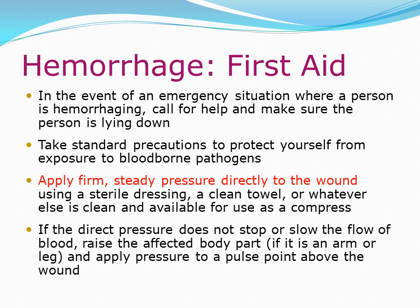Hemorrhage first aid: Call for help and make sure the person is lying down. Take standard precautions to protect yourself from blood-borne pathogens. Apply firm, steady pressure directly to the wound using a sterile dressing, clean towel, or whatever clean material is available as a compress. If direct pressure does not stop the bleeding, raise the affected body part (if an arm or leg) and apply pressure to the pulse point above the wound.